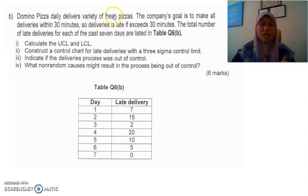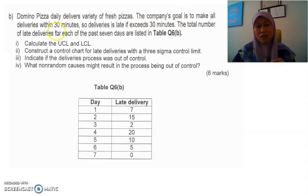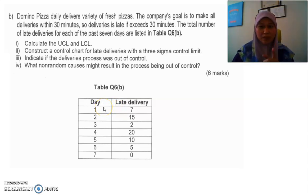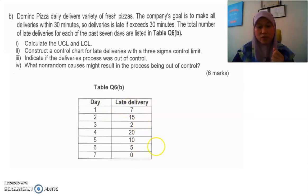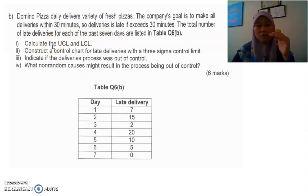The question gives us information on the days and late deliveries. The company's goal is to make all deliveries within 30 minutes — that's their target, so anything beyond 30 minutes is considered late. They have one week of data. For day one, the late delivery count is seven times in a day, up to seven days, and the total number of late deliveries for each of the past seven days is given.